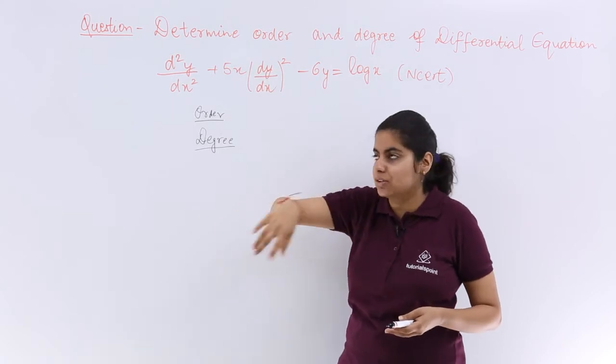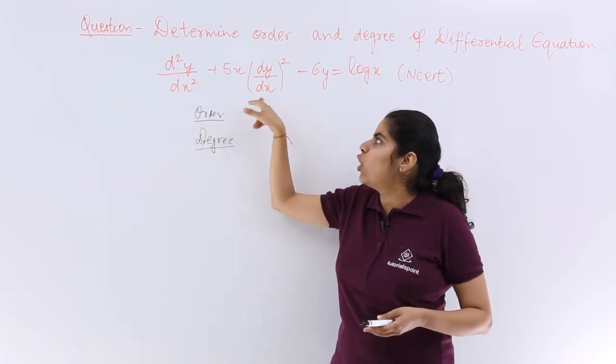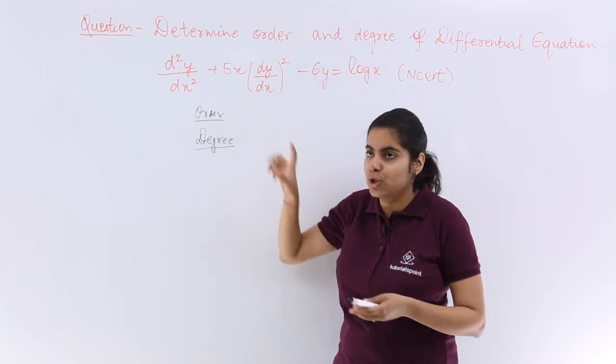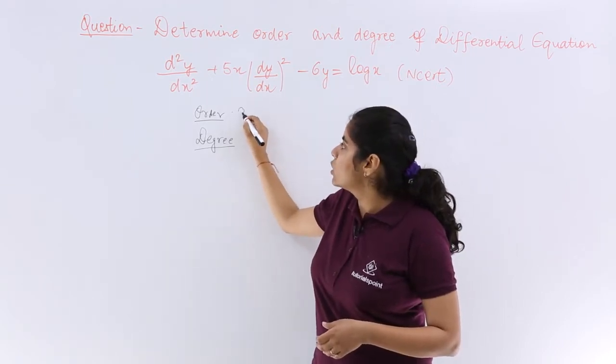Do not get confused with the power. One has order 2, the other order 1. Which is greater, 2 or 1? 2. So here the order is 2.